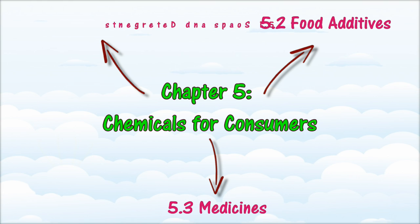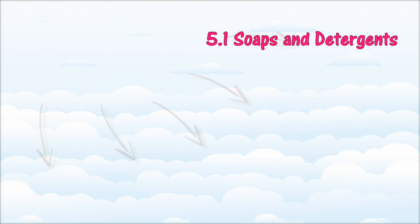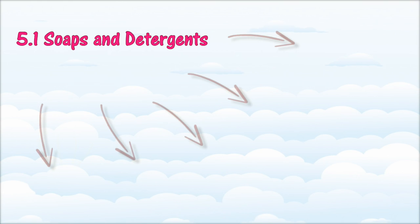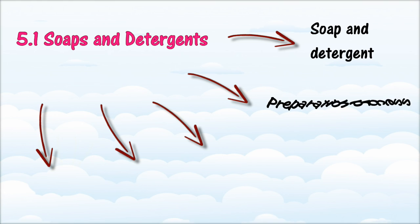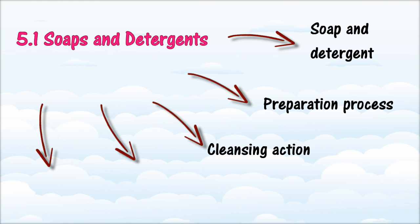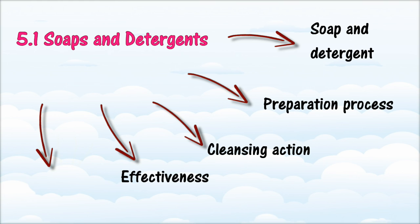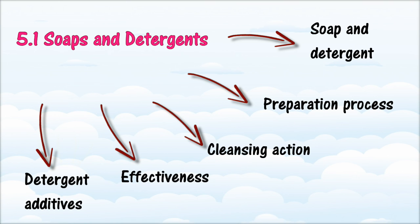In Section 5.1, we will learn about soaps and detergents. At the end of this section, you should be able to: state what soap is and state what detergent is; describe the soap preparation process and the detergent preparation process; describe the cleansing action of soap and the cleansing action of detergent; compare and contrast the effectiveness of the cleansing action of soap and detergent; and identify the additives in detergent and their respective functions.